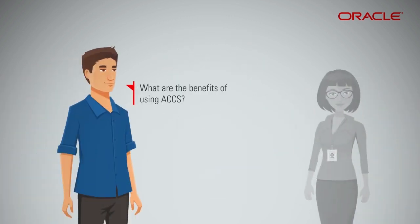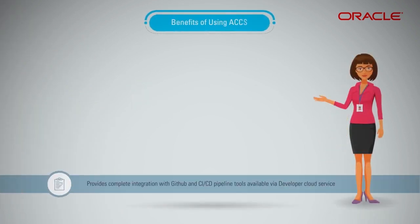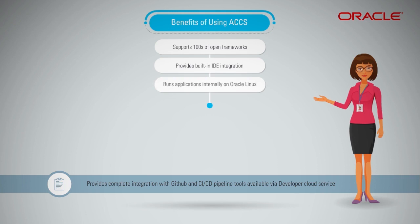What are the benefits of using ACCS? Here are some of the key benefits. ACCS supports hundreds of open frameworks like Spring, VODIN, or JRuby to easily deploy applications. It provides built-in IDE integration with Eclipse, NetBeans, and JDeveloper. It runs applications internally on Oracle Linux and Docker containers, providing elastic and dynamic scale-out, scale-in, scale-up, and scale-down.